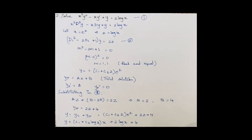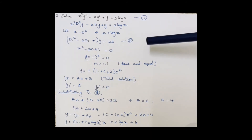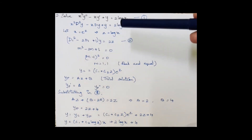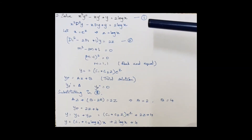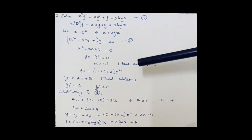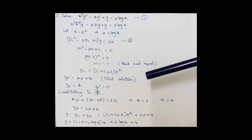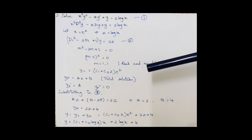Let's learn another example. This is a non-homogeneous equation. Similarly, we substitute x = e^z (so D1 = d/dz) and apply the operator transformations. On substituting, we obtain the auxiliary equation m² - 2m + 1 = 0. Again the roots are 1 and 1, real and equal, so the complementary function is (c1 + c2·z)·e^z. Now let's apply the undetermined coefficients method to find the particular integral.